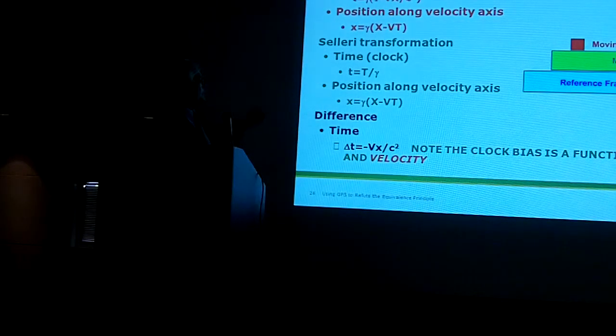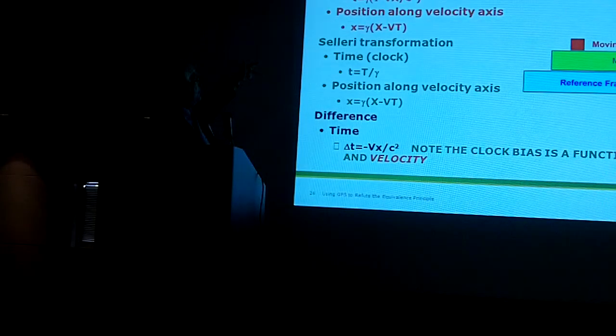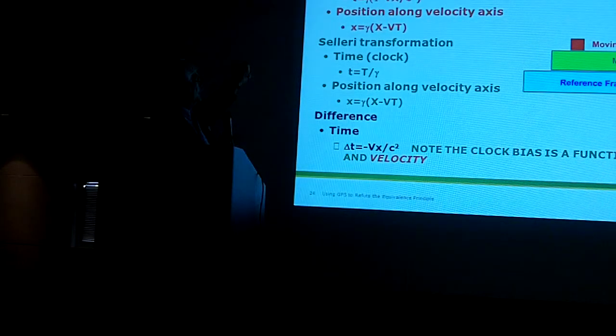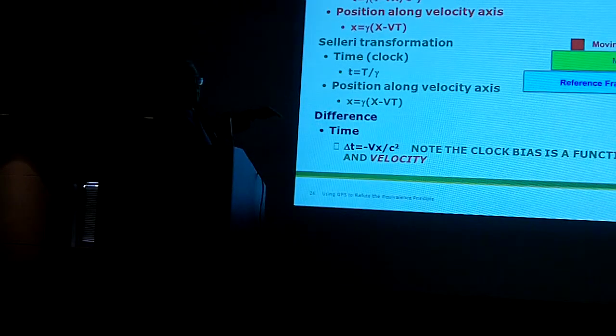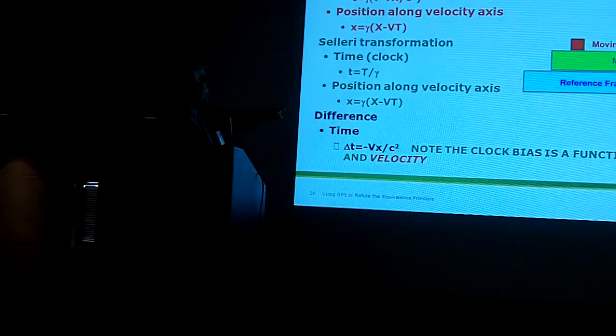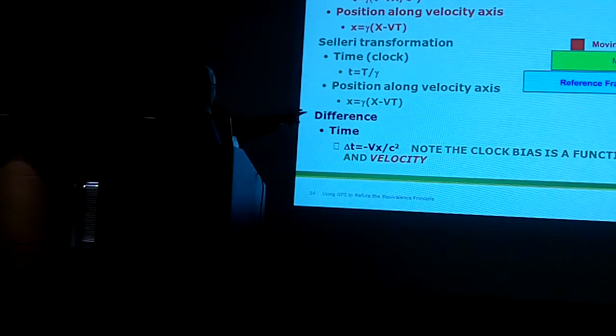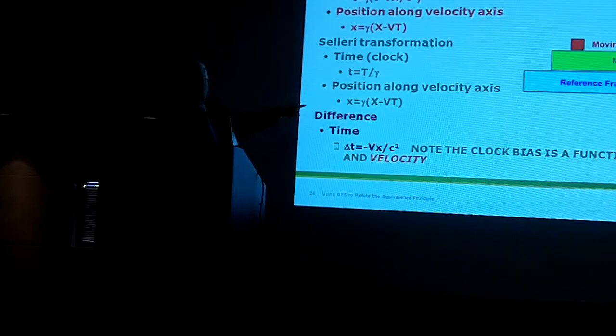And in fact, he says position changes. It turns out in the forward direction, this is identical with the Lorentz transformation in position. But in the reverse direction, Lorentz puts another gamma. He does a double shortening, whereas the Celery undoes the shortening, which we'll see is a little more logical.